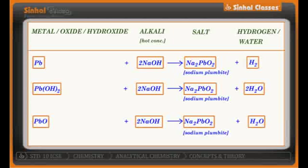Now take the same metal hydroxide Pb(OH)2 treated with NaOH — you will get sodium plumbite along with water, not hydrogen gas this time. Similarly, take the amphoteric oxide of lead — PbO — treat it with NaOH and you will again get sodium plumbite, and as you can tell, the product will be water again.